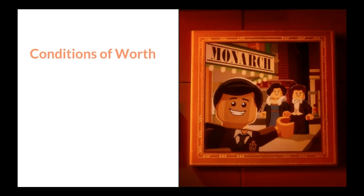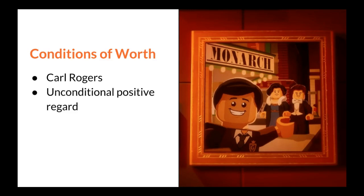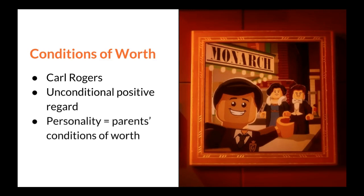Second, the theory of conditions of worth is based on the work of Carl Rogers and his concept of unconditional positive regard. He believed that unconditional positive regard — or love, affection, and respect with no strings attached — is necessary for people to be able to explore fully all that they can achieve and become. As such, personality is based on how parents set up conditions of worth for their child. In other words, a child will be loved only if they do what and how their parents say. There are conditions to a parent's love.